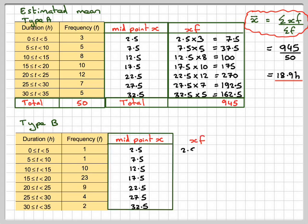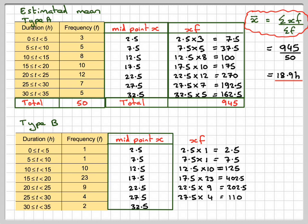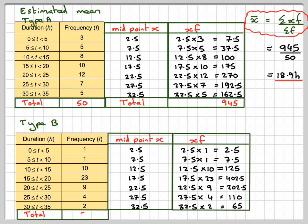So 2.5 times 1, 7.5 times 1, 12.5 times 10, and so on. Notice because the data is grouped, some of the original meaning of the data has been lost. That gives me 915, so that will be 915 divided by the sum of the frequencies, which is 50, which gives me 18.3.